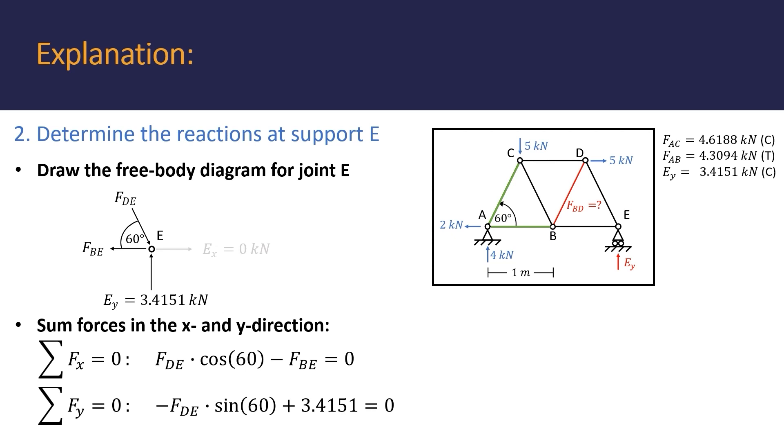From this free body diagram, the equations in the X and Y direction can be found as before. In the X direction, the equation is given by force of DE cosine 60 negative force of BE equals 0. And in the Y direction, the equation is given by negative force of DE sine 60 plus 3.4151 equals 0.